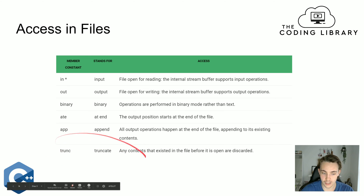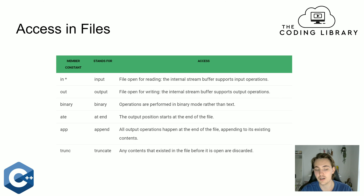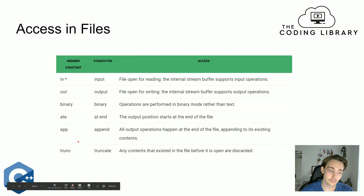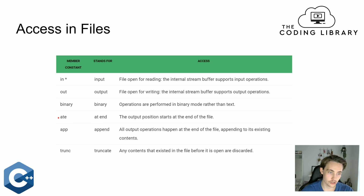Or we can use truncate, where any content that existed in the file before it is opened is discarded. So if we want to open a file, discard everything in it, and output new things to the file, we can use truncate and we'll have a clean new file. We specify these member constants when we are opening up the file in the constructor.